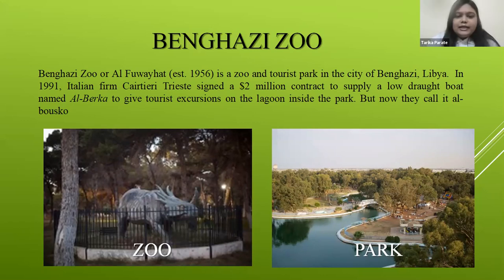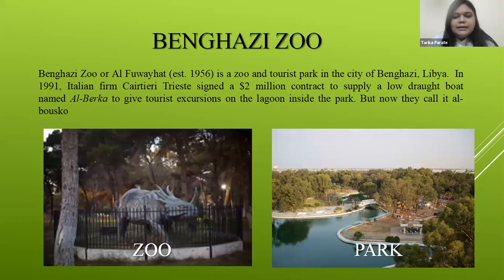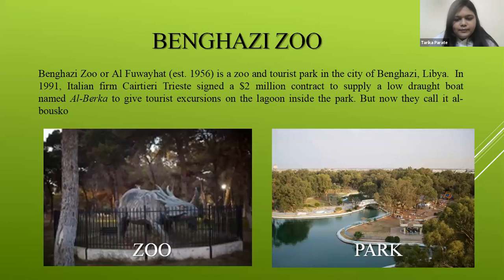In 1999, the Italian firm Ketel Zink signed a two-billion-dollar contract to supply a boat named Elberka to give tourist excursions on the lagoon inside the park, which they now call El Bosco.